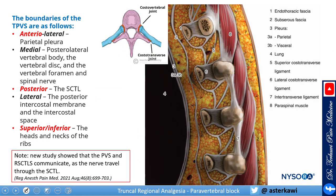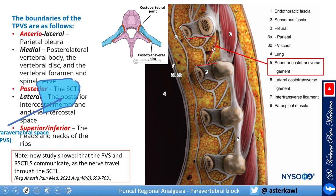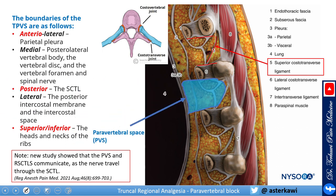Let's look at another cut. The superior costo-transverse ligament forms the posterior border of the paravertebral space. The superior and inferior borders are formed by the head and neck of the ribs. So this is the paravertebral space: anterolateral — parietal pleura; medial — the vertebra; posterior — the superior costo-transverse ligament; lateral — the posterior intercostal membrane and the intercostal space; superior and inferior — the head and neck of the ribs.